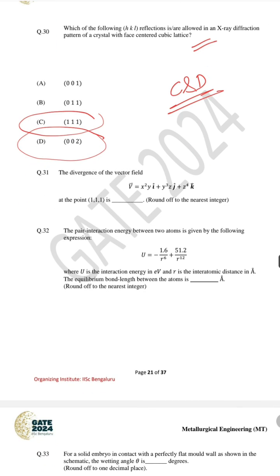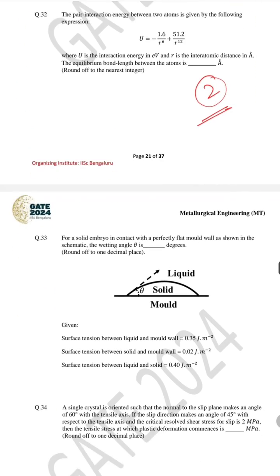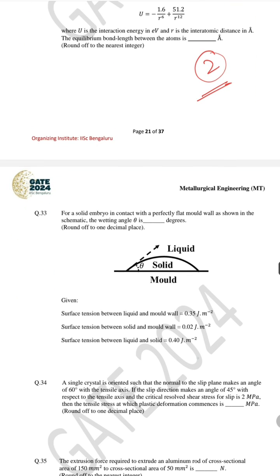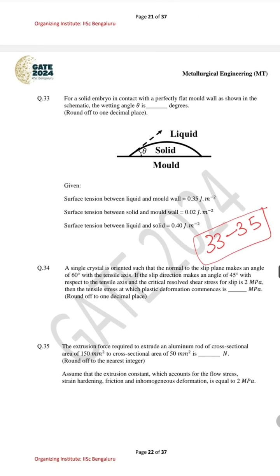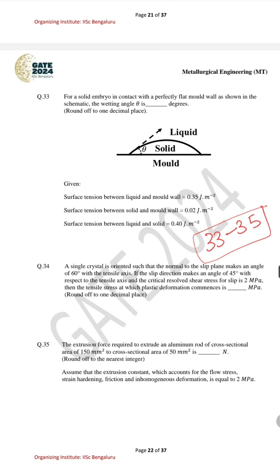For question number 31, a NAT type problem, the correct answer is 9. For question number 32 the correct answer is 2. For question number 33 the correct answer is in the range 33 to 35 — any answer within this range will receive full marks. For question number 34, related to CRSS, the correct answer is between 5.5 and 5.8.